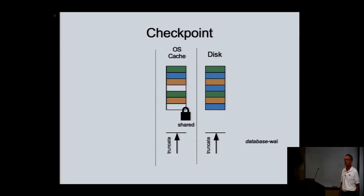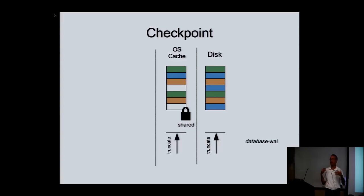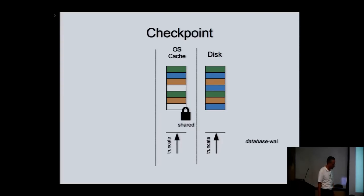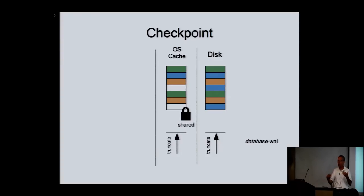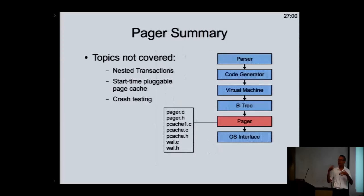Question from the back: how do we handle multiple computers reading the same database file over NFS? Your network file system has to support POSIX advisory locking or the Windows equivalent — if it doesn't, you run the risk of corruption. The locking is POSIX advisory locking. There's also a different OS layer that substitutes creating dot-files in place of POSIX advisory locking, but that's heavier, slower, and if you crash the lock doesn't automatically go away. I'm running badly behind so I'm going to go faster.